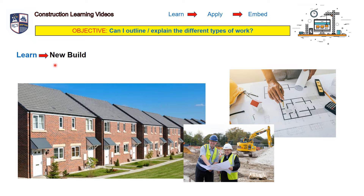So here we go. The first type of work is new build. This is where buildings are constructed from scratch, from foundations and services to the final roof tile. So it could be a domestic building — a home — it could be an office block, any type of construction that starts from scratch. From the foundations up is a new build.